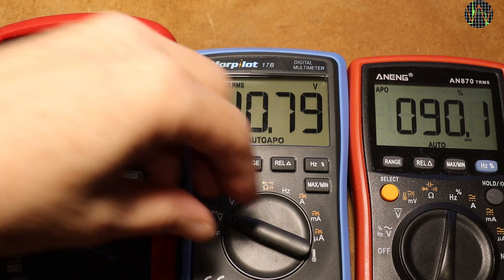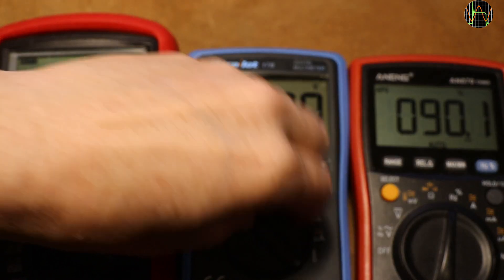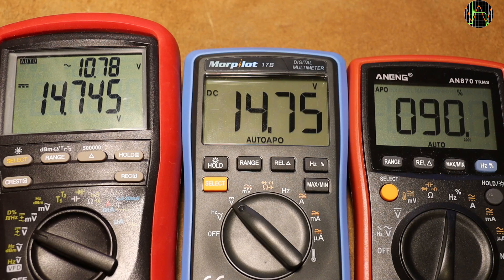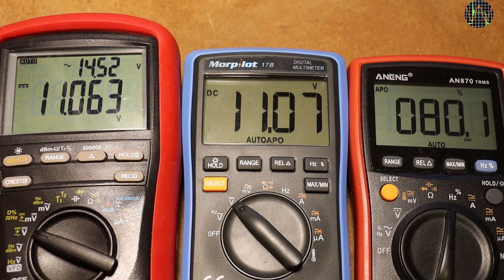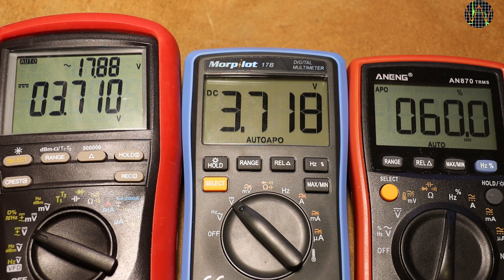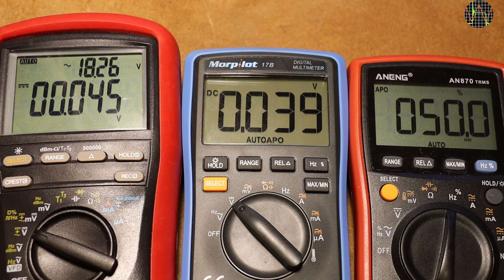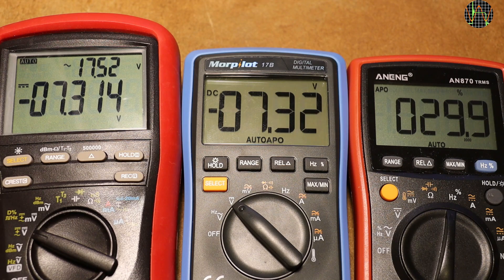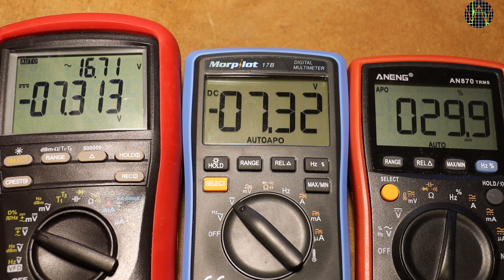Switching to DC, the Morpilot shows the correct value with no issues. It works fine even when the AC and DC parts fall in different ranges, which is when most multimeters like for example the Grenova fail and have to resort to manual ranging.